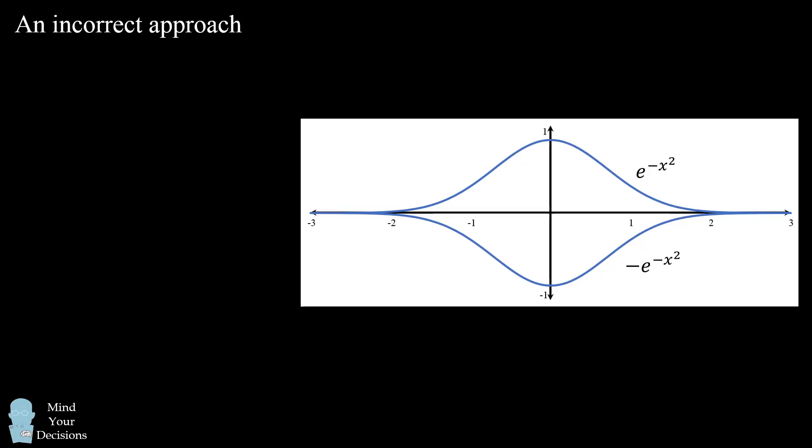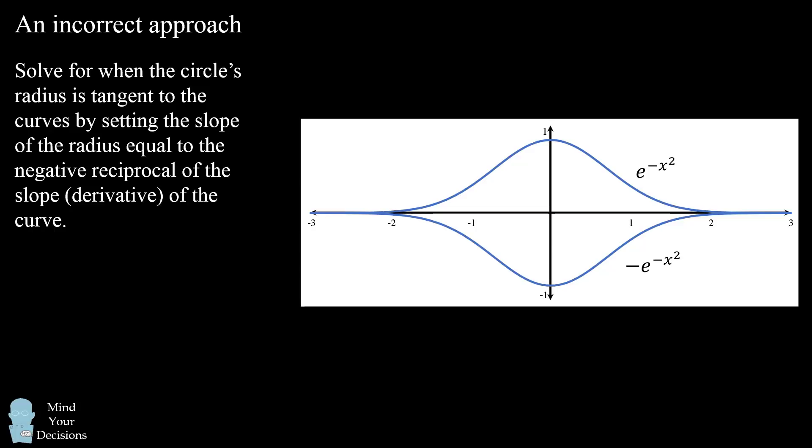So this approach involves thinking about the geometry. If the circle is just touching the curves then you could solve for the circle's radius for the point at which it's tangent to the curves. This could be accomplished by setting the slope of the radius equal to the negative reciprocal of the slope or derivative of the curve.